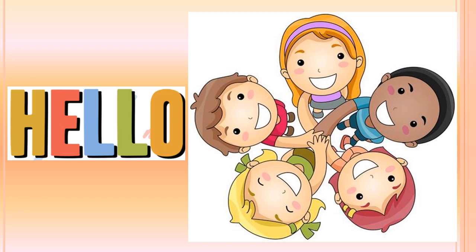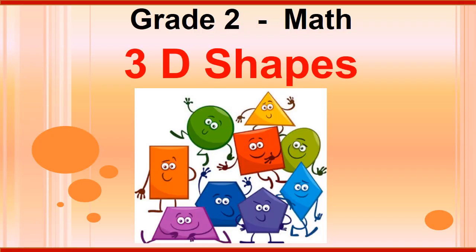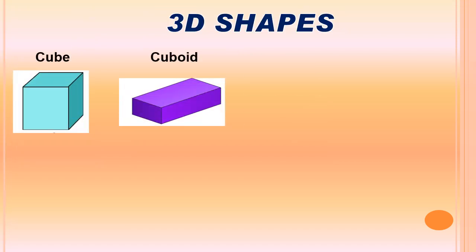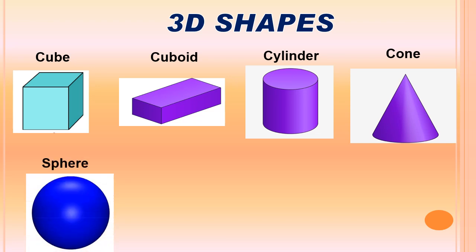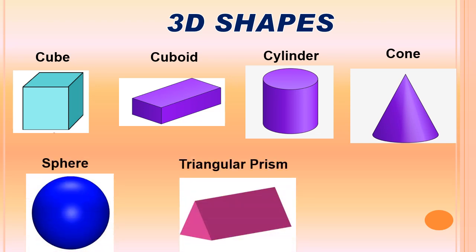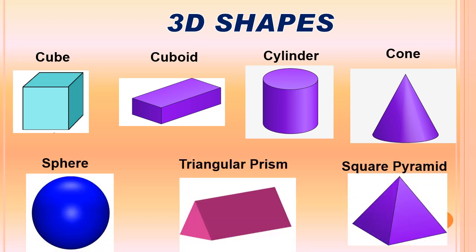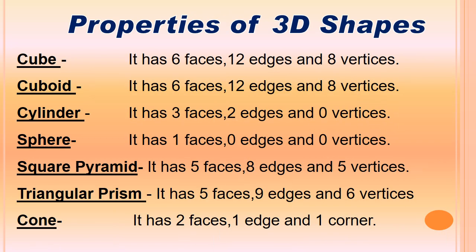Now, if you remember, we have learnt 3D shapes this year, such as cube, cuboid, cylinder, cone, sphere, triangular prism, square pyramid and so on. And we also know their properties.